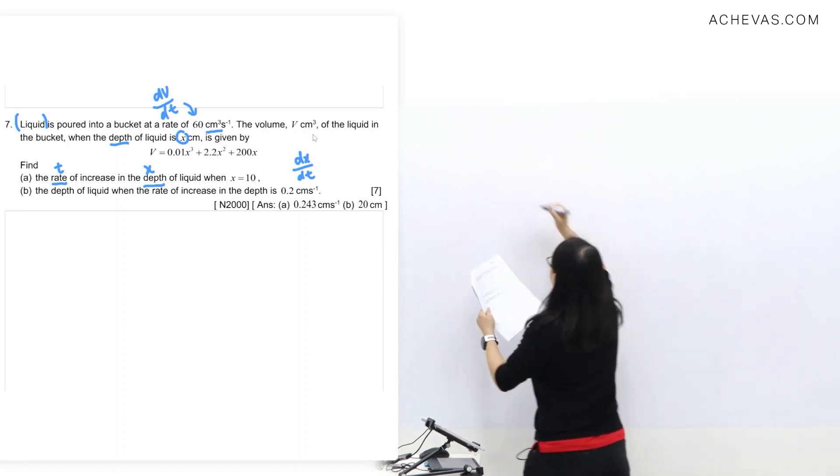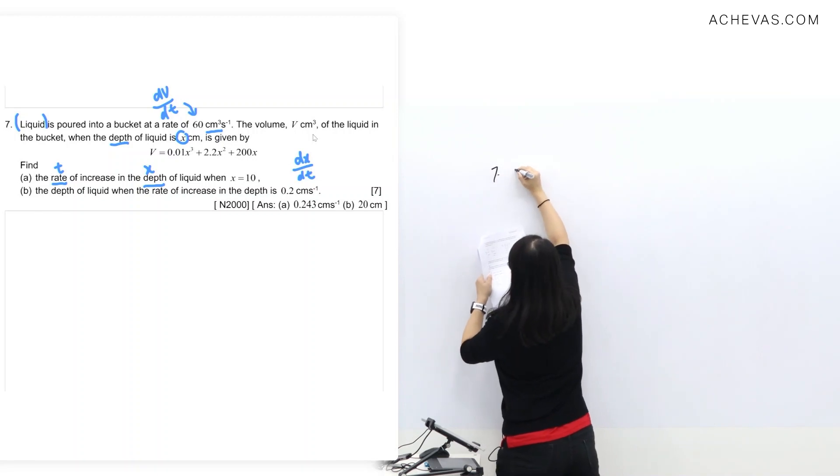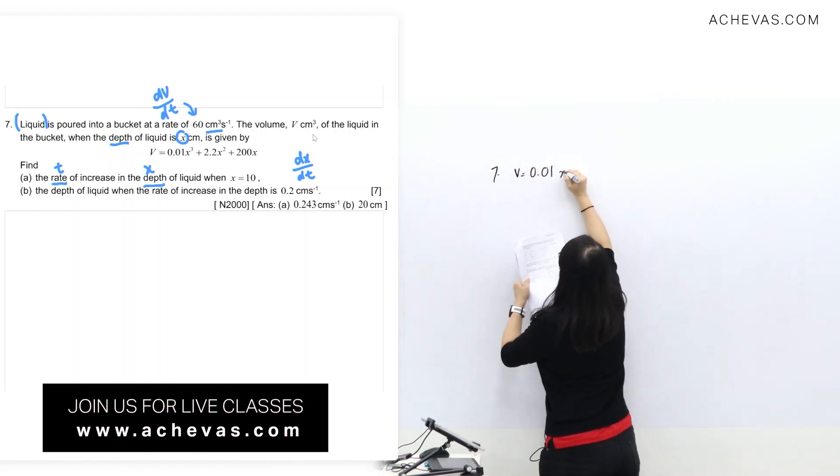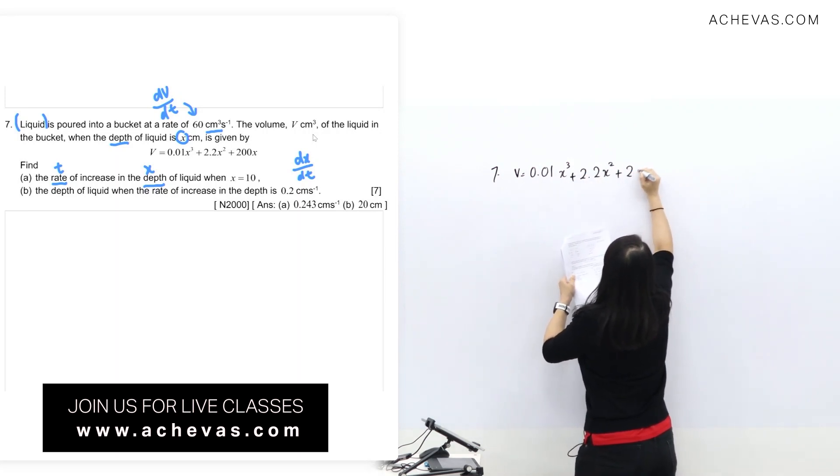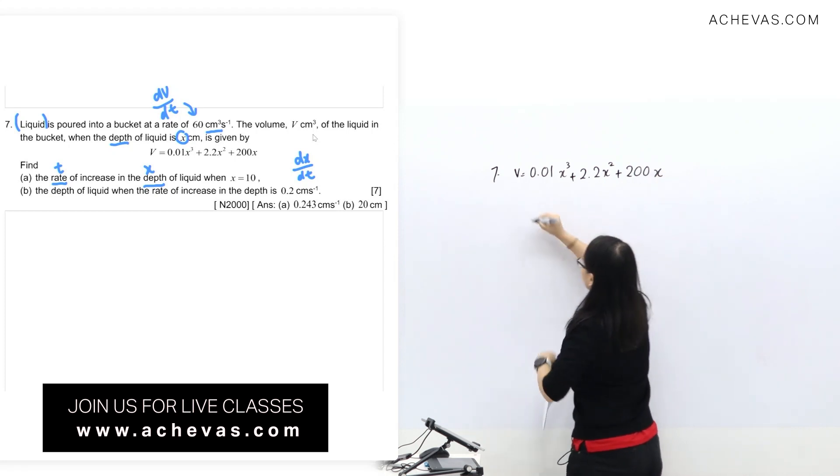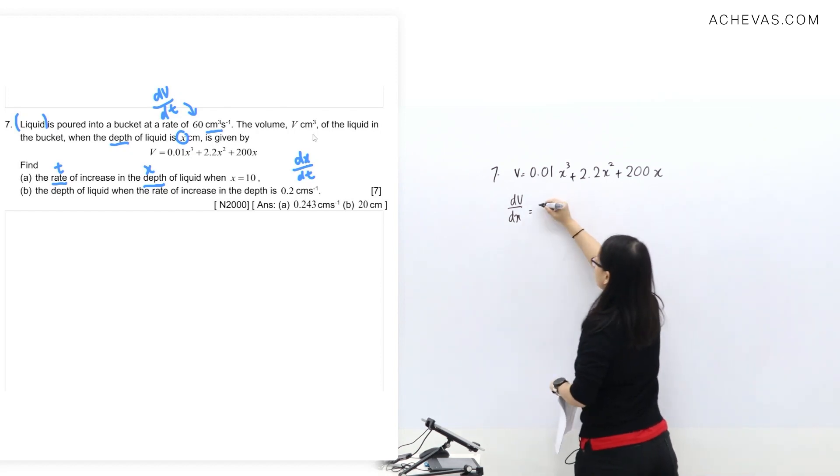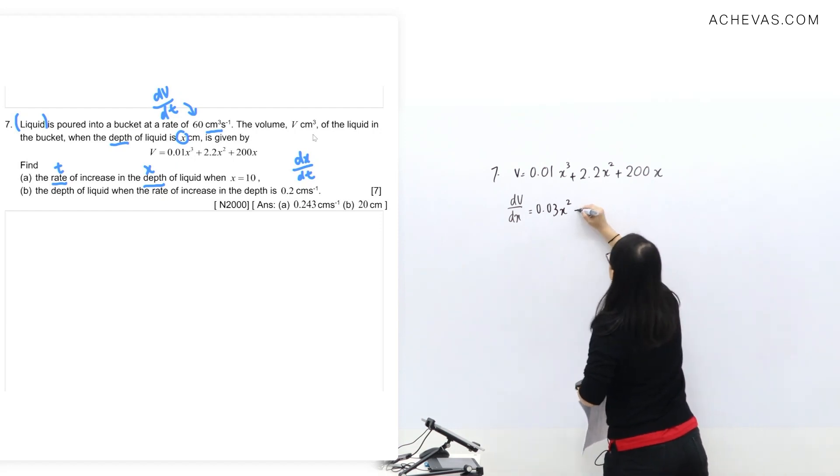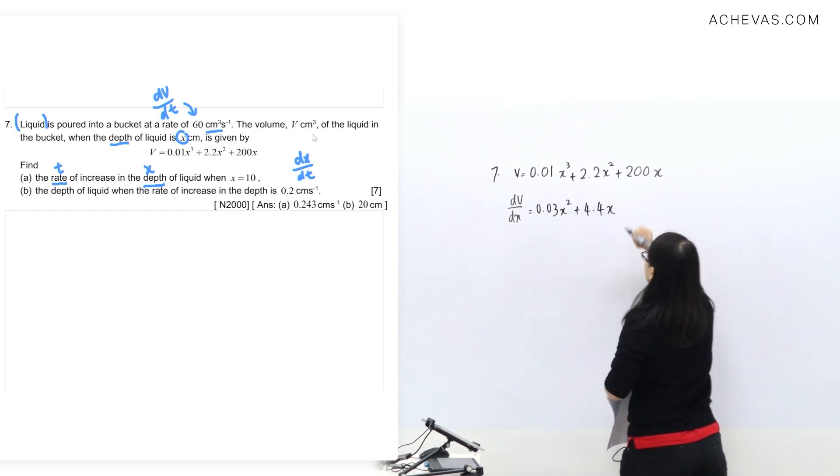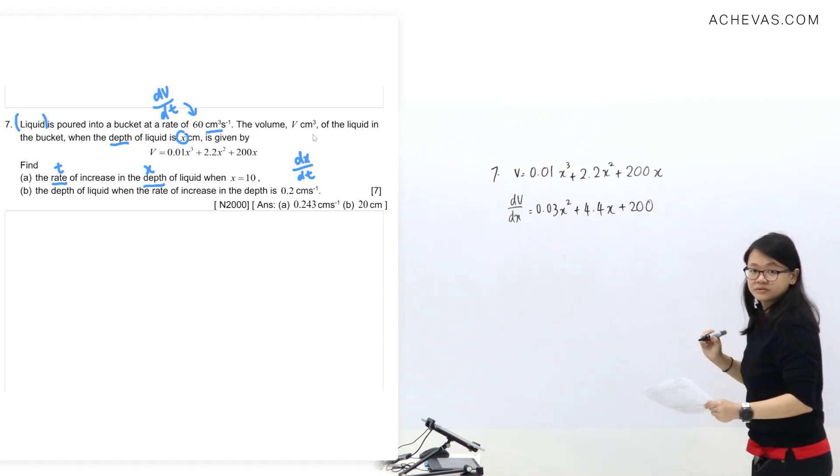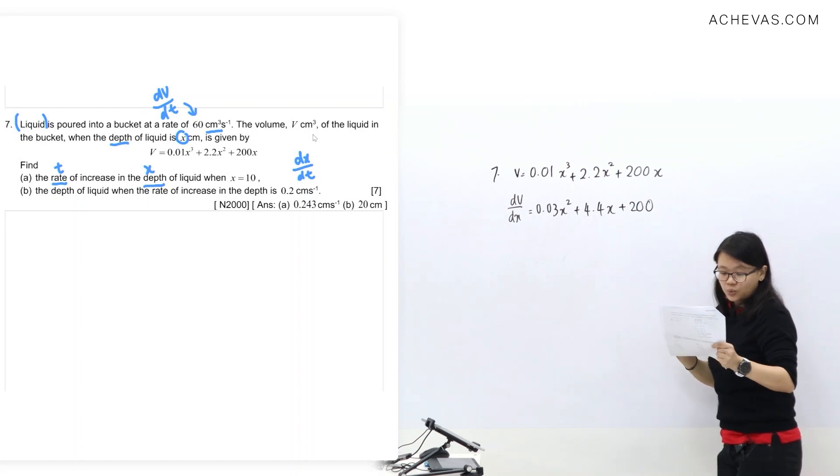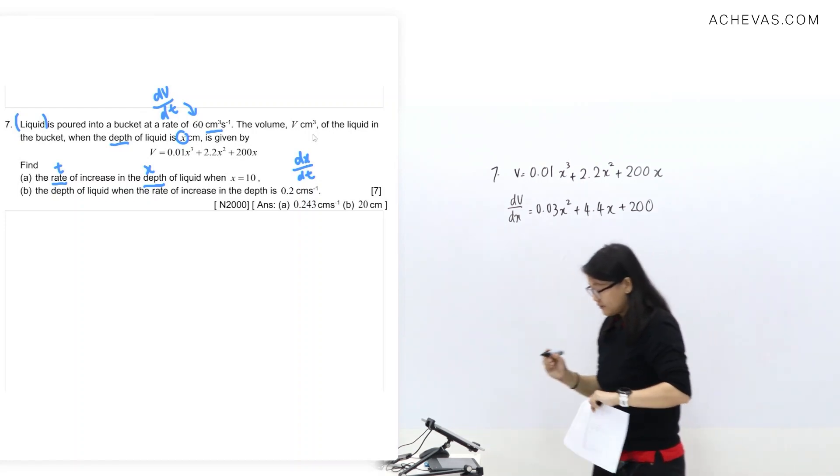Since the question has V, we're going to proceed with differentiation first, then we'll do a chain rule later. I'm given V, so I can directly do dV/dx. This is a simple differentiation: multiply 3 to the front, reduce power by 1, so 0.03 times 2 is 0.06 to the power 2. That's 4.4, reduce power, so you get x.